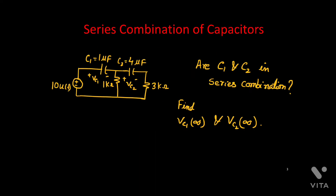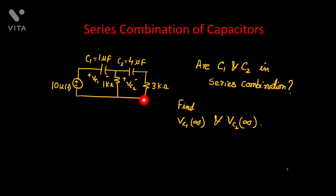Here you see I have given one problem. In this circuit there are two capacitors C1 and C2, and two resistors are connected in this way. The problem is: can you find whether these two capacitors are connected in series or not, and can you find the voltage across these two capacitors at steady state? This kind of problem comes frequently in competitive exams, so if you follow this lecture I hope you will be able to solve this kind of problem.